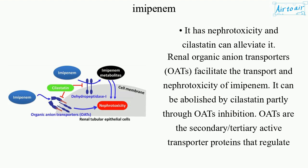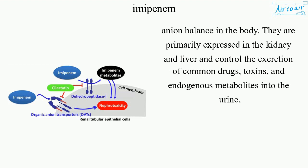It has nephrotoxicity, and cilastatin can alleviate it. Renal organic anion transporters (OATs) facilitate the transport and nephrotoxicity of Imipenem. This can be abolished by cilastatin partly through OAT inhibition. OATs are secondary and tertiary active transporter proteins that regulate anion balance in the body. They are primarily expressed in the kidney and liver and control the excretion of common drugs, toxins, and endogenous metabolites into the urine.